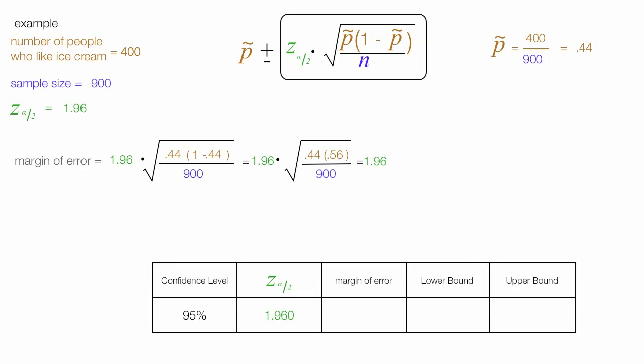This is equal to 1.96 times the square root of 0.2464, divided by 900. I'm doing this one step at a time. This is equal to 1.96 times the square root of 0.00274, which is equal to 0.0165529. So the margin of error equals 0.0324, which is a lot of calculations. Just do them one step at a time. You'll be fine.